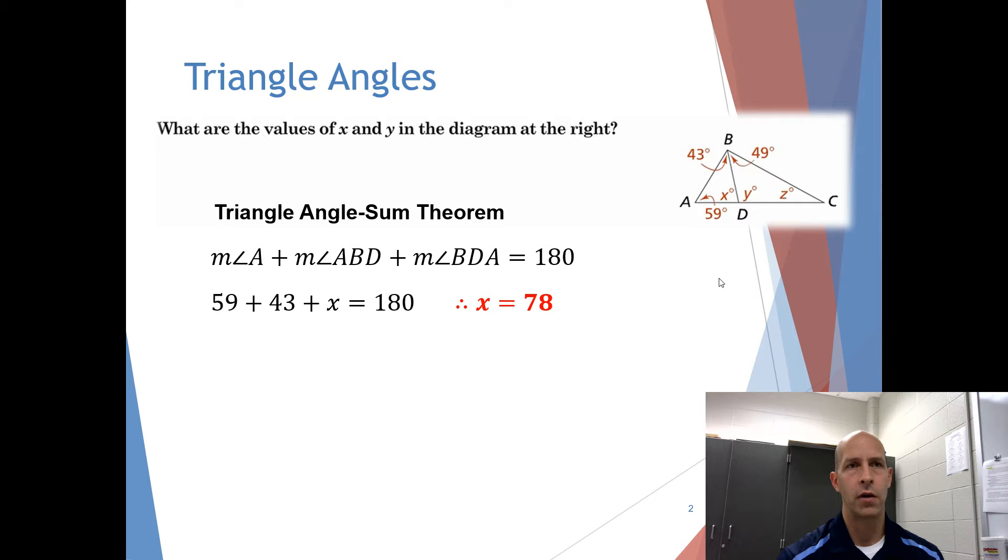The other theorem that's very important in this section is the triangle exterior angle theorem. This theorem tells us that the measure of angle BDC is equal to the measure of angle A plus the measure of angle ABD. In other words, the exterior angle is equal to the sum of the two remote interior angles.